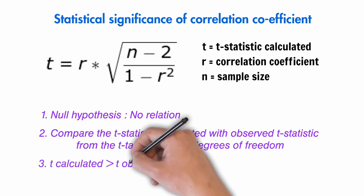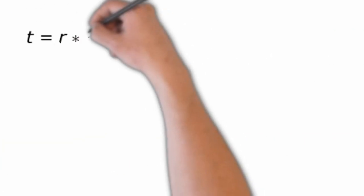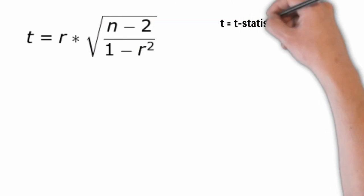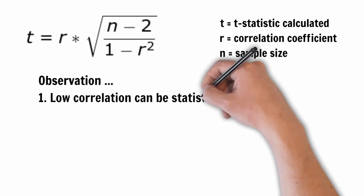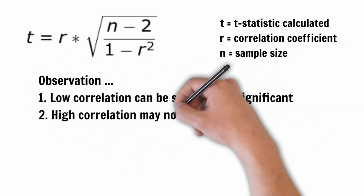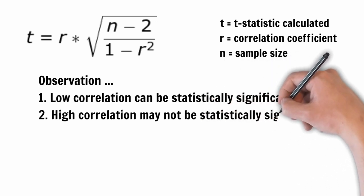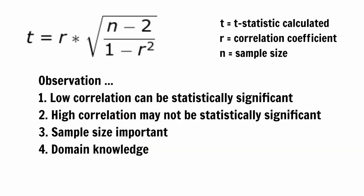If t calculated is greater than t observed, then we do not reject the null hypothesis. Using this formula, we have found that: a) despite low values of correlation, we can still observe statistical significance between the two variables; b) the flip of the above statement is that high correlation need not be statistically significant since it can be based on a very small sample of data; and c) therefore, the sample size plays a very important role.